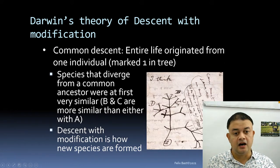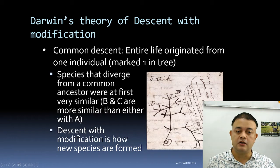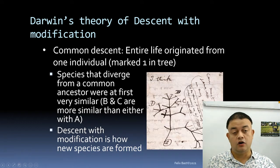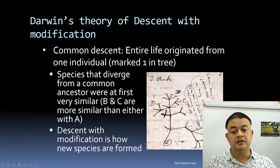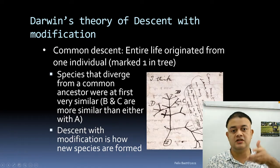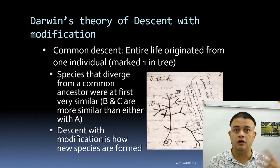In his sketch Darwin wrote that B and C are a lot more similar to each other than either is to A, because more changes happened from A to B or C. So descent with modification is how a new species is formed — this is vertical transmission. Now we know horizontal gene transmission also happens.